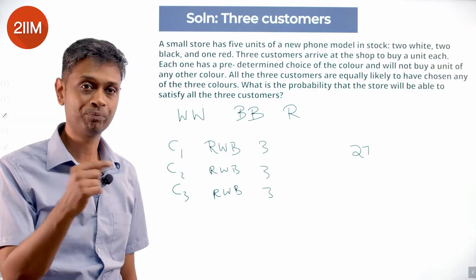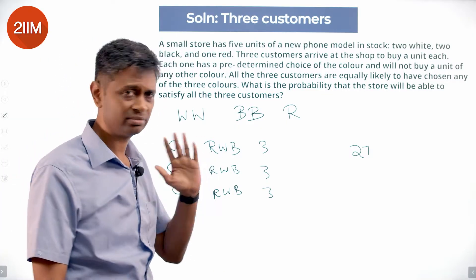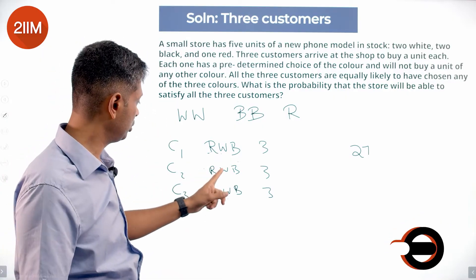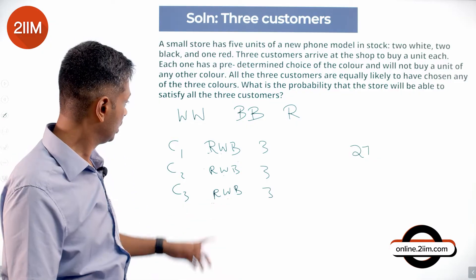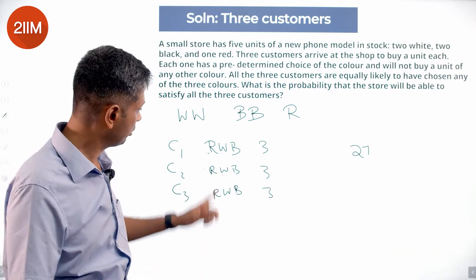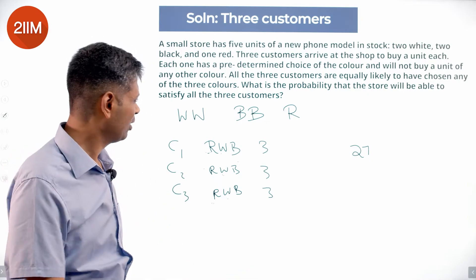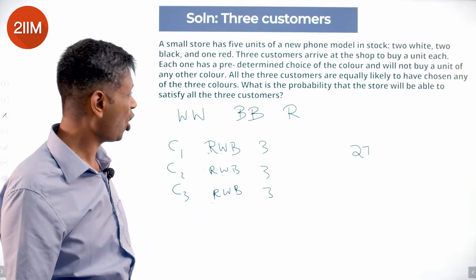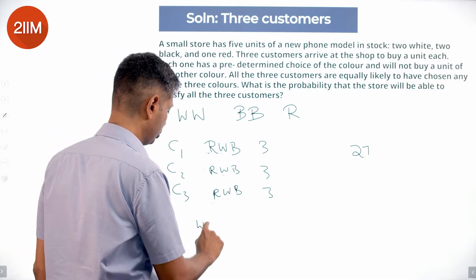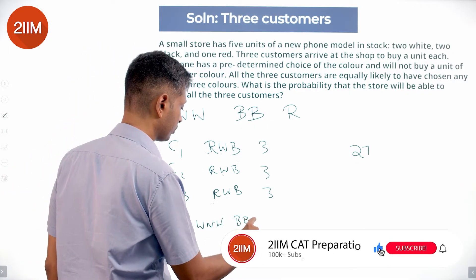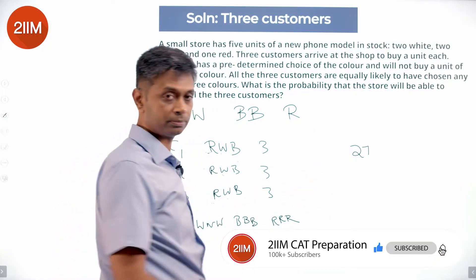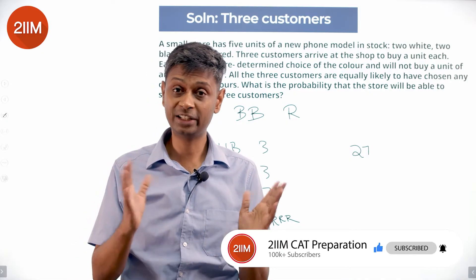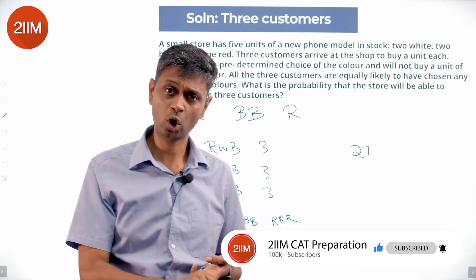Now let's check which combinations are satisfiable. If it were RRW — not possible. If it were RBR — not possible. If it were WWR — possible. If it were RWB — possible. BBB is not possible. Some are possible, some are not. All three of the same color is not possible: WWW, BBB, RRR all fail. All three different is possible in any sequence: RWB, RBW, WRB, WBR, BRW, BWR — all six permutations are possible.